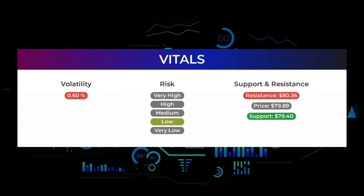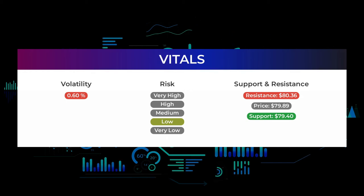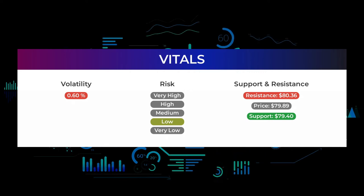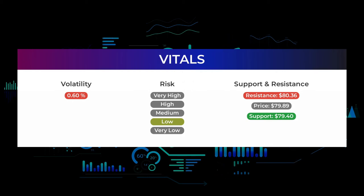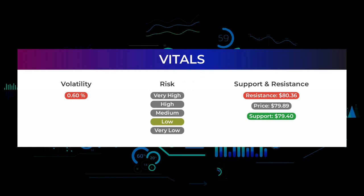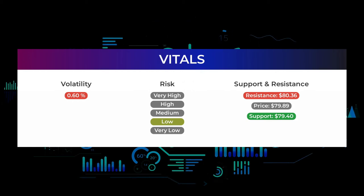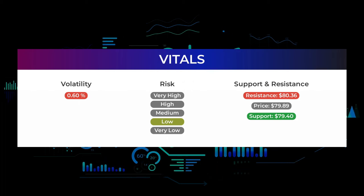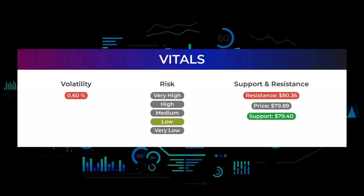Support, risk, and stop loss for Mimecast Limited. Mimecast Limited finds support from accumulated volume at $79.40, and this level may hold a buying opportunity as an upward reaction can be expected when the support is being tested. In general the stock tends to have very controlled movements and with good liquidity the risk is considered very low. During the last day the stock moved 50 cents between high and low, or 0.63%.